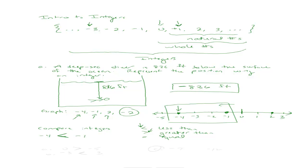Let's put a less than, greater than, or equal symbol between some numbers. Comparing 0 and negative 5: negative 5 is farther to the left, so negative 5 is smaller — we use greater than (0 > −5). Between negative 3 and 3: negative 3 is farther to the left, so negative 3 is smaller (−3 < 3). I'll leave negative 7 and negative 12 for you to compare and figure out which one is smaller.